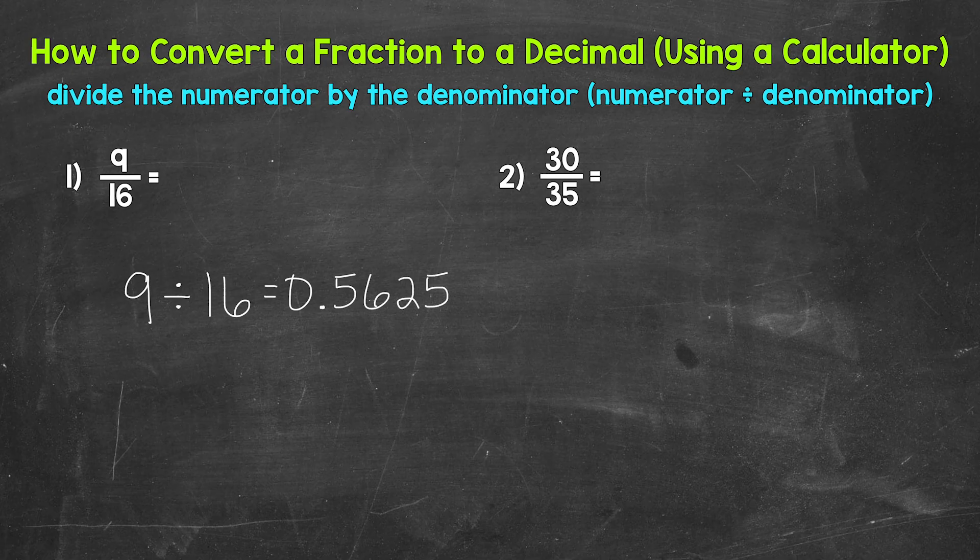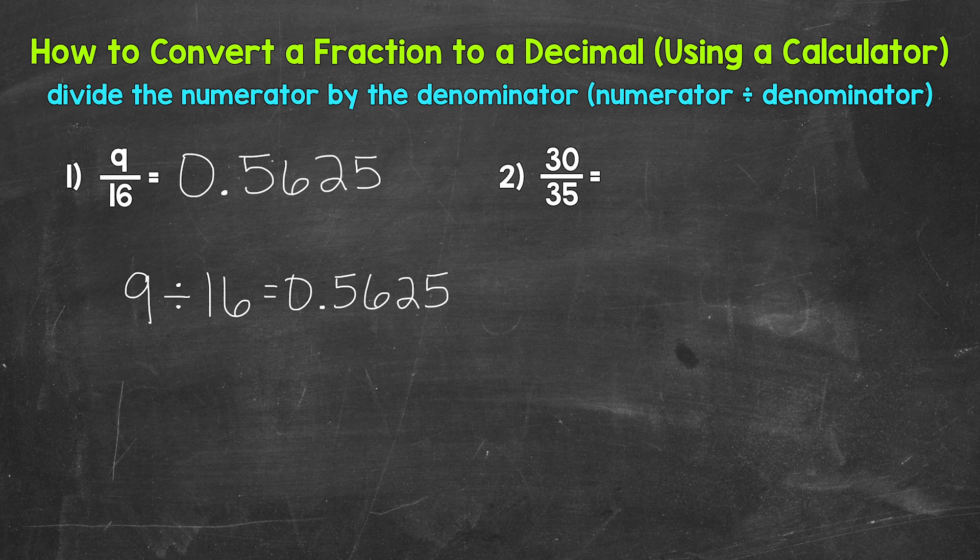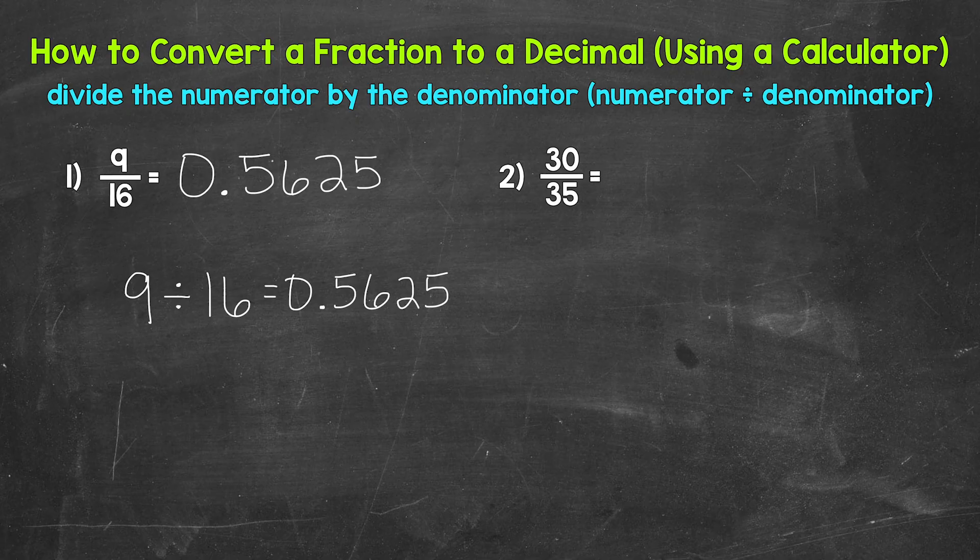So 5,625 ten thousandths. So let's write this up here. 9 sixteenths equals 0.5625. Again, 5,625 ten thousandths. Now another possibility here is to round this to make it shorter. So if we get long decimals or even repeating decimals, we can round. So for example, number one,